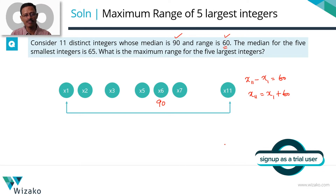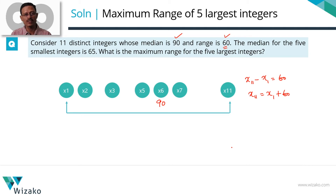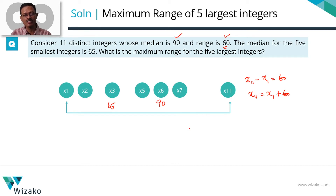The third piece of information is that the median for the five smallest integers is 65. What are the five smallest integers? x1 to x5 are the five smallest integers. The median for those five numbers is going to be the third number from the left, so x3 is equal to 65. So we've now plotted down three data points: x6 is 90, x3 is 65, and the range of these 11 numbers is 60.